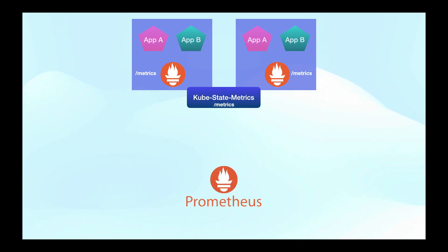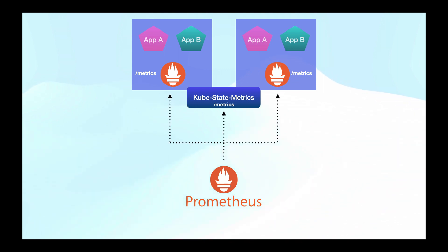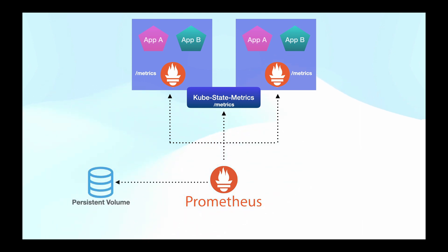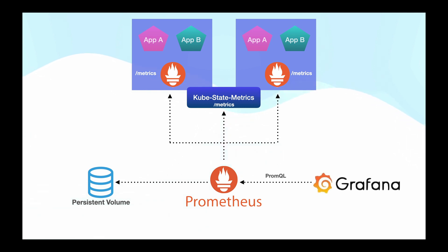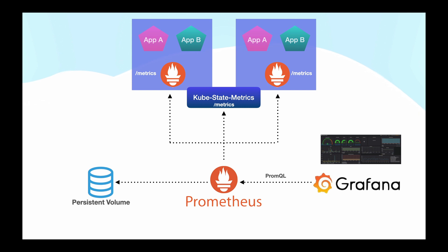Then we have the Prometheus server. The server periodically pulls metrics from different sources like exporters and the kube-state-metrics service, and by default uses local storage to store all that data on disk. Once the system collects the data, tools like Grafana can access it by using the PromQL query language and build user-friendly dashboards on top of it. So that's a high-level overview of how these components work together.